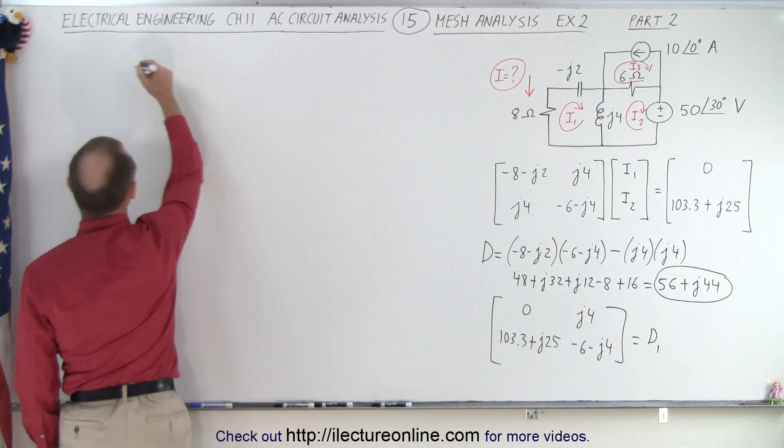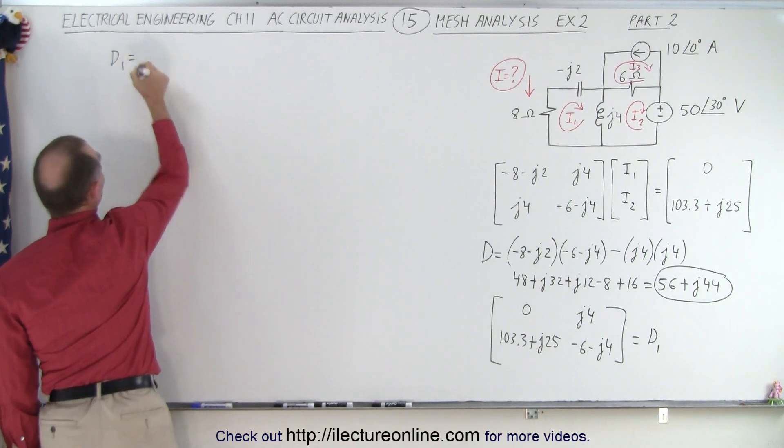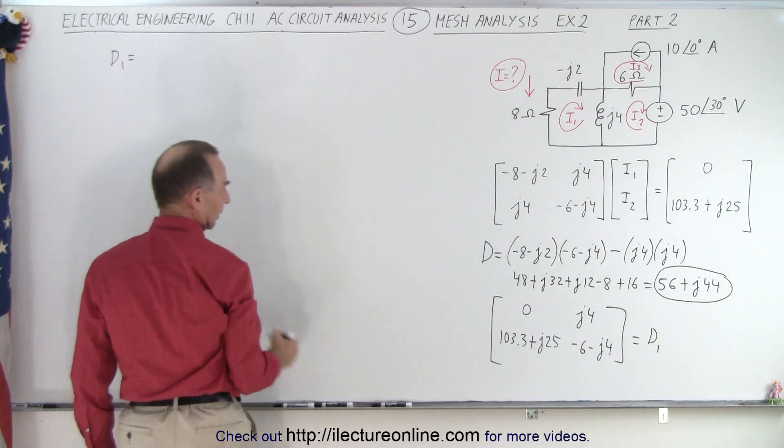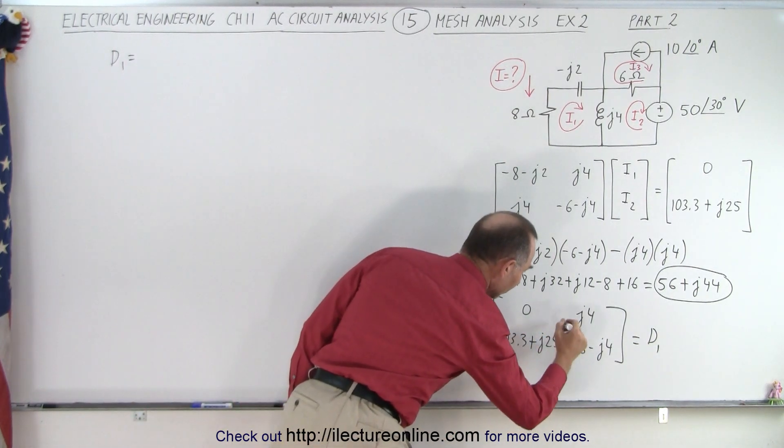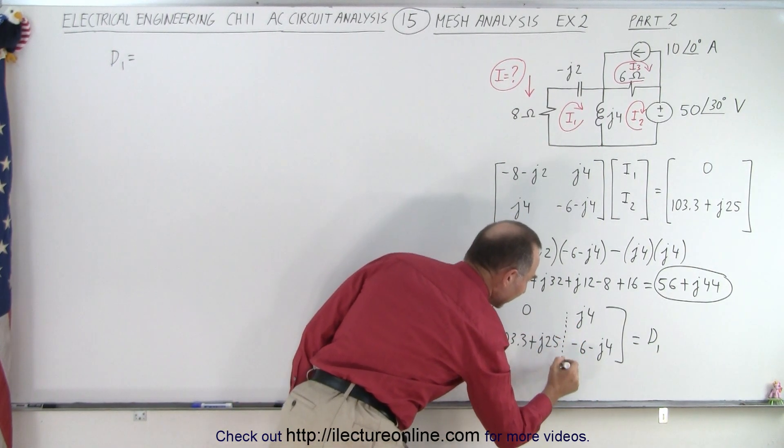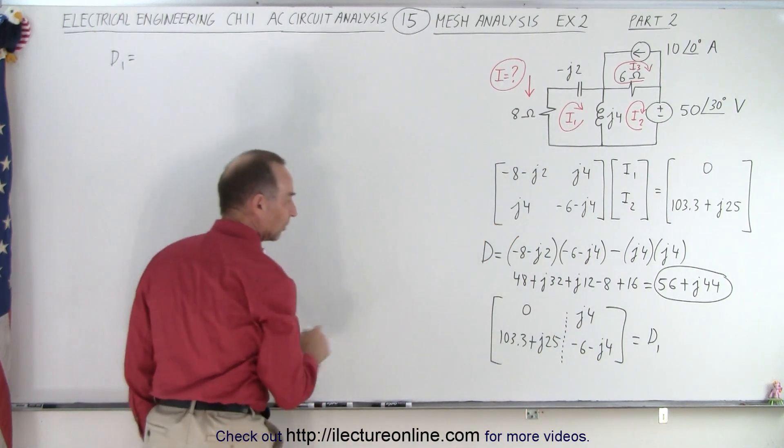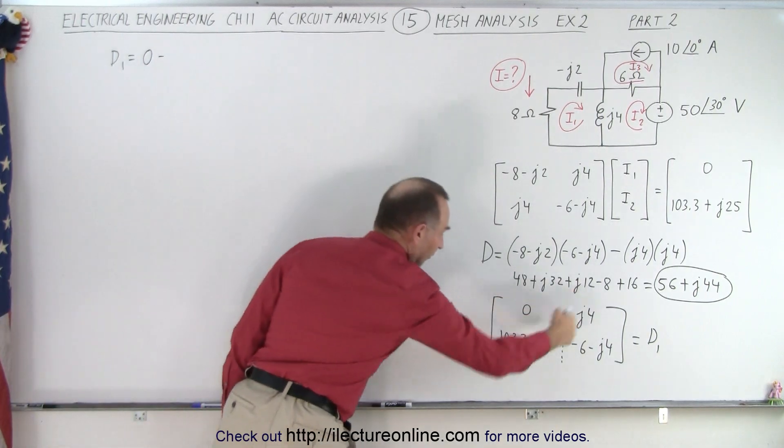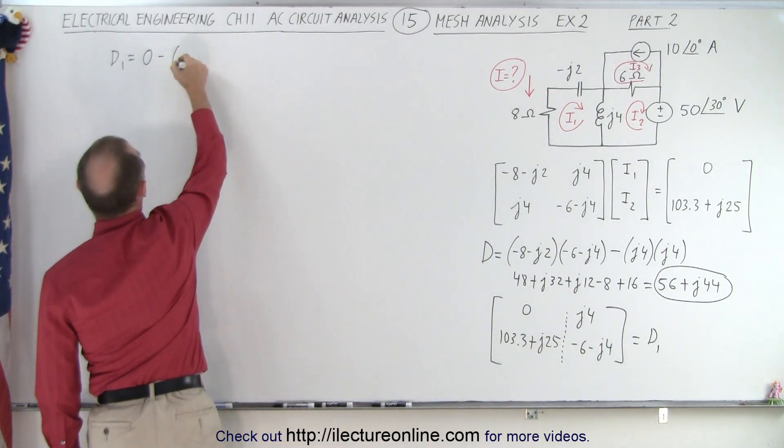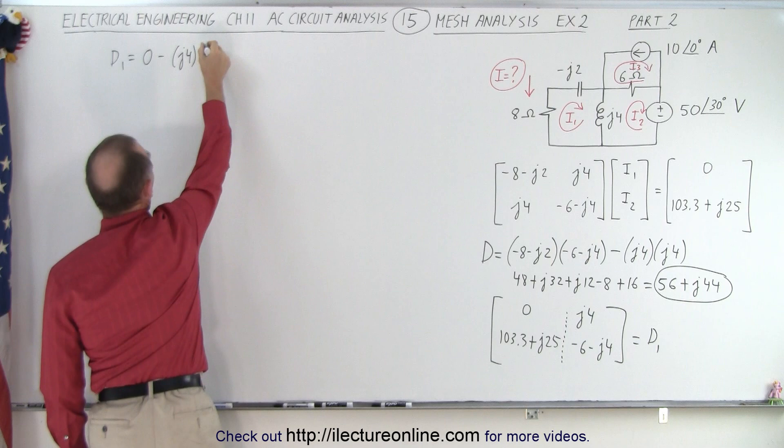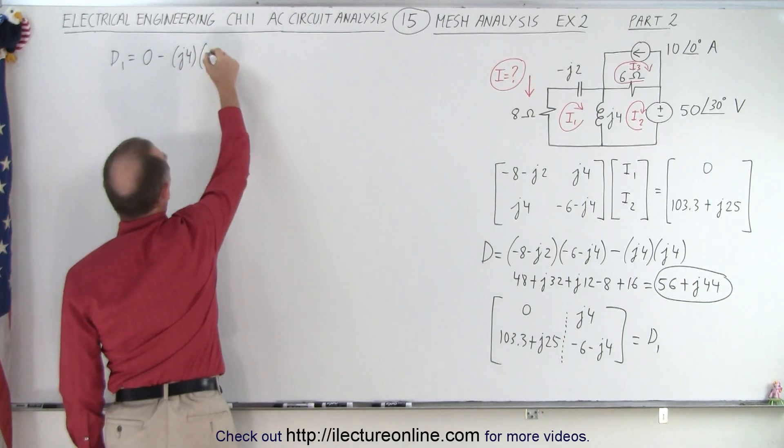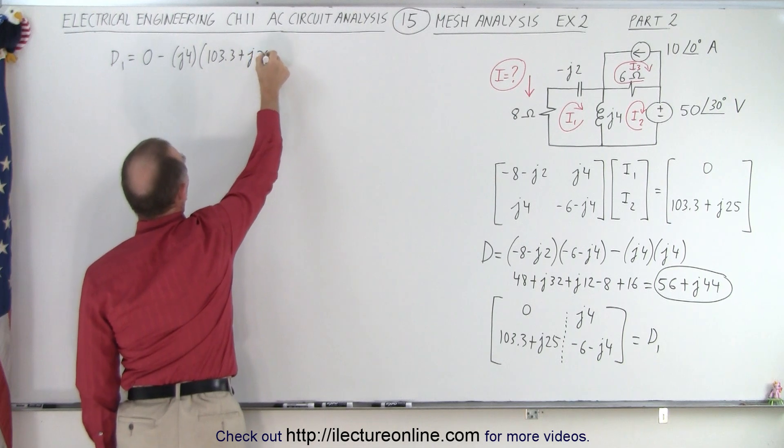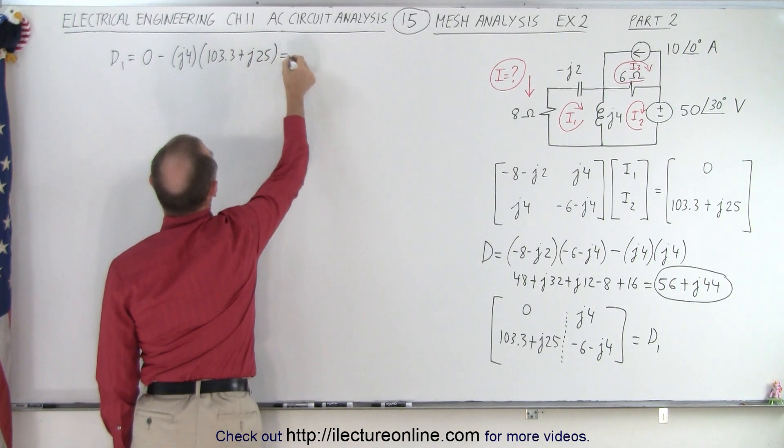D1 is equal to the product of those two. Of course, that would be 0. I'll just put a little dashed line here to make sure that we separate those two. So we have 0 times that. That gives me 0 minus the product of these two. So that gives me a J4 and multiply that times 103.3 plus J25.